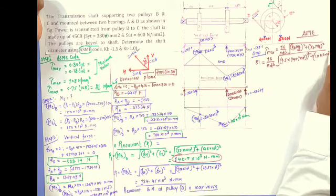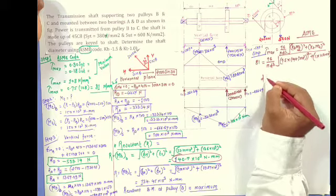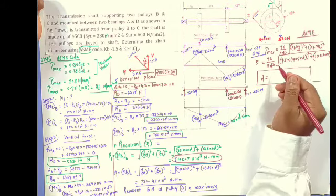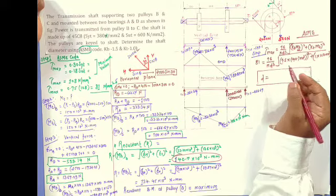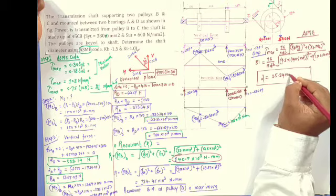That is 150 into 10 raise to 3. So here unknown is only one, through which we will get the diameter of shaft. By the calculation it will get around 25.34 mm.